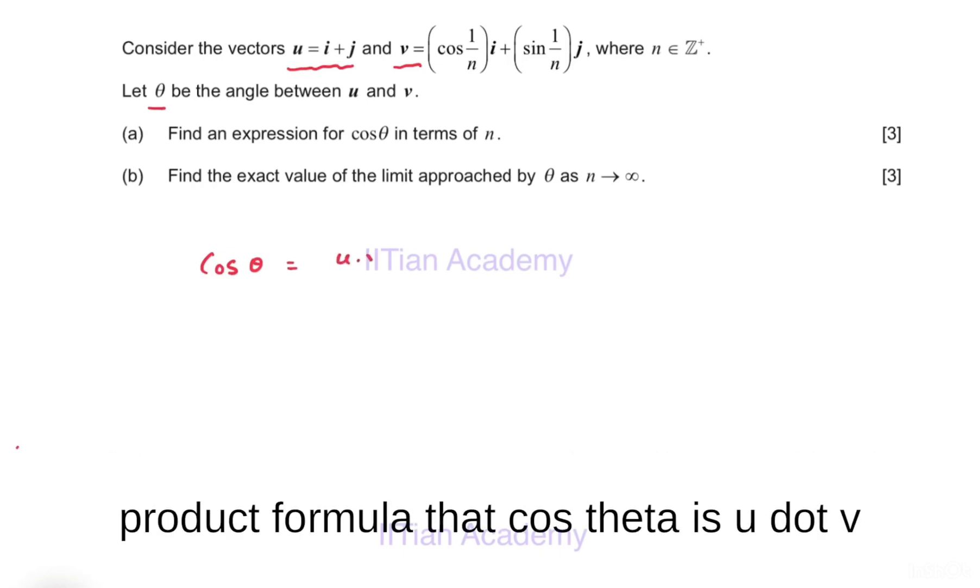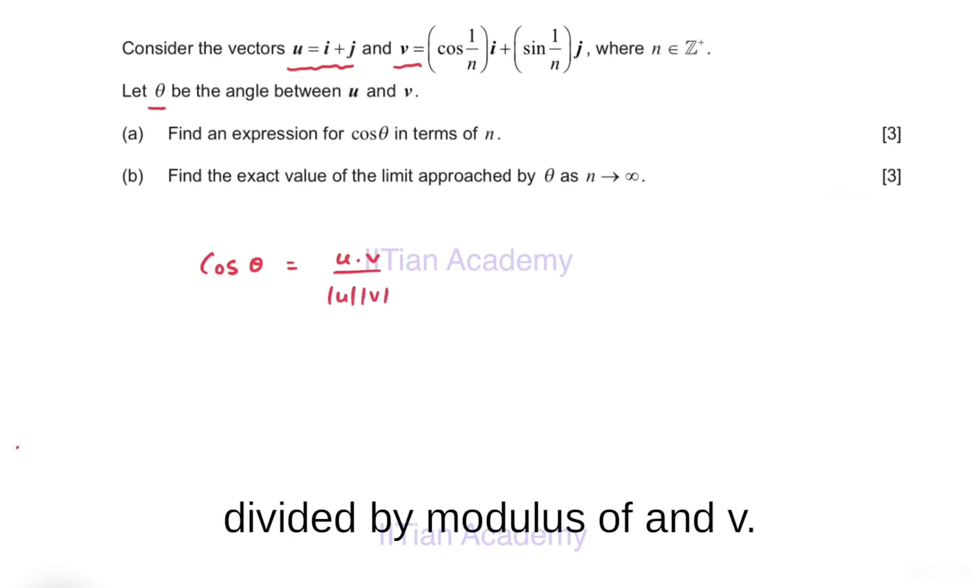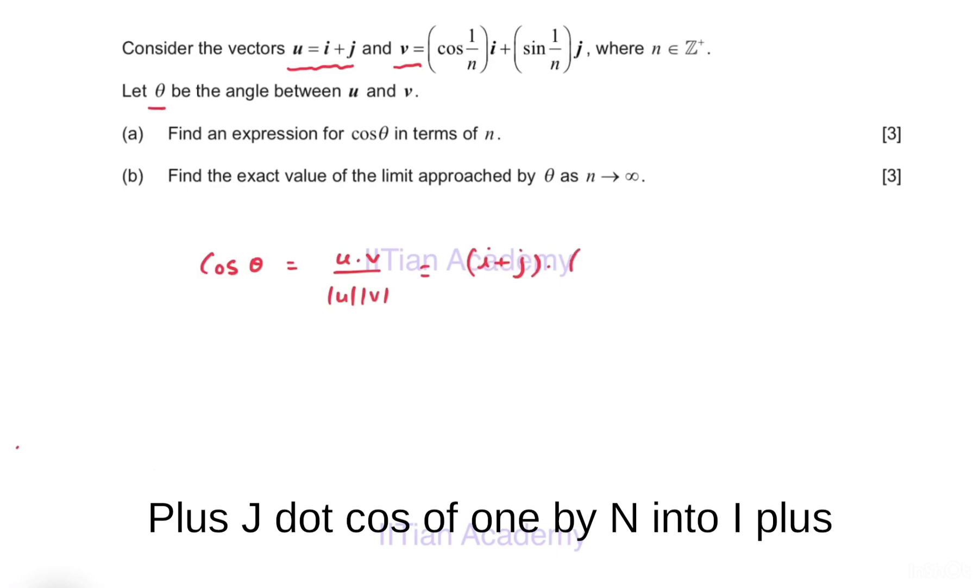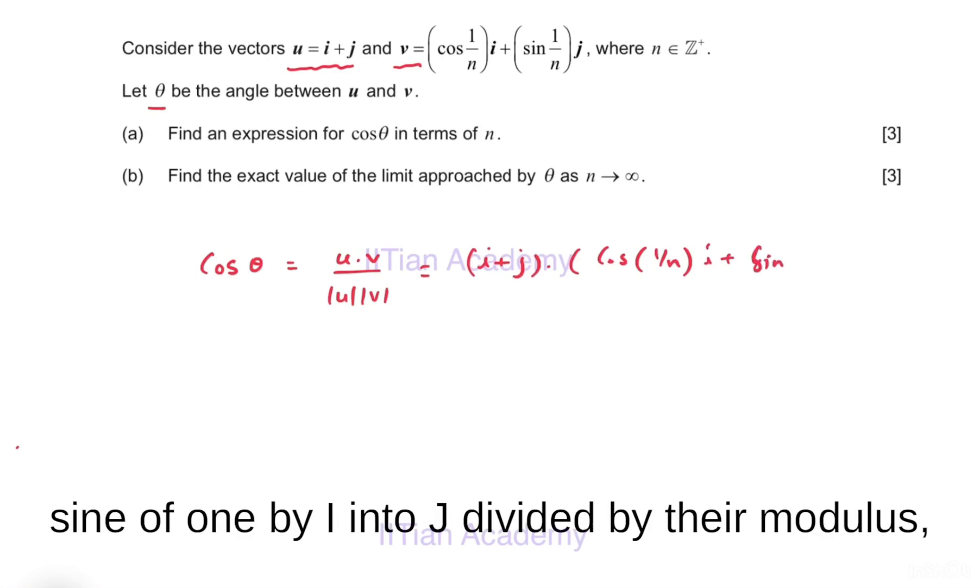So in our case, this is (i plus j) dot (cos(1/n)i plus sin(1/n)j).